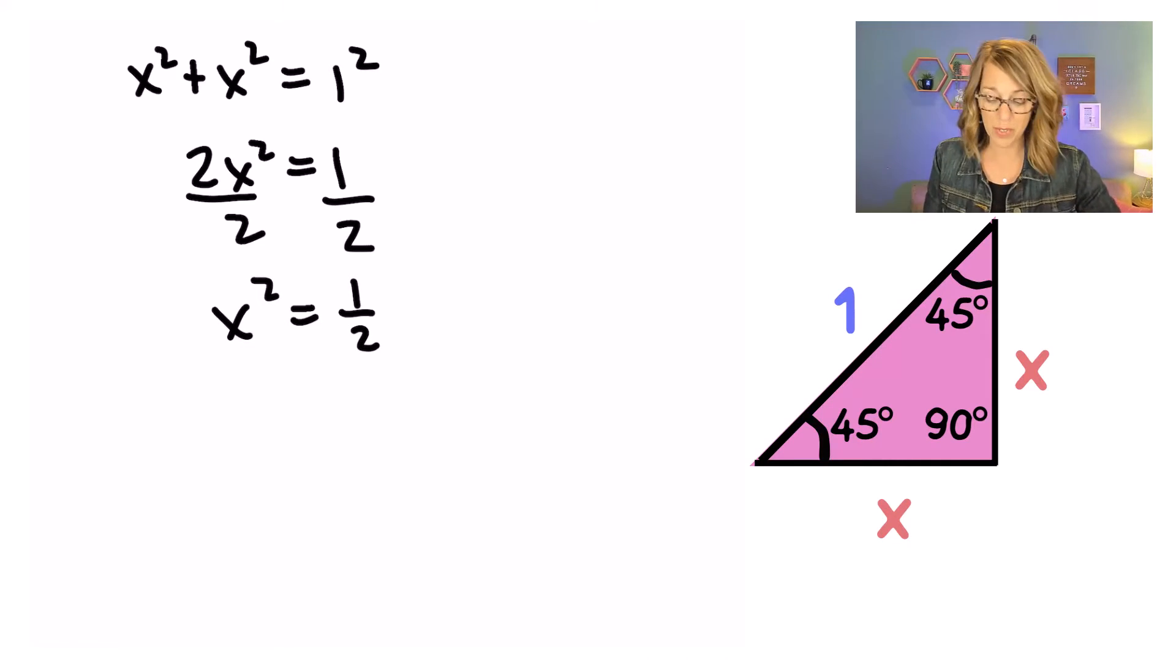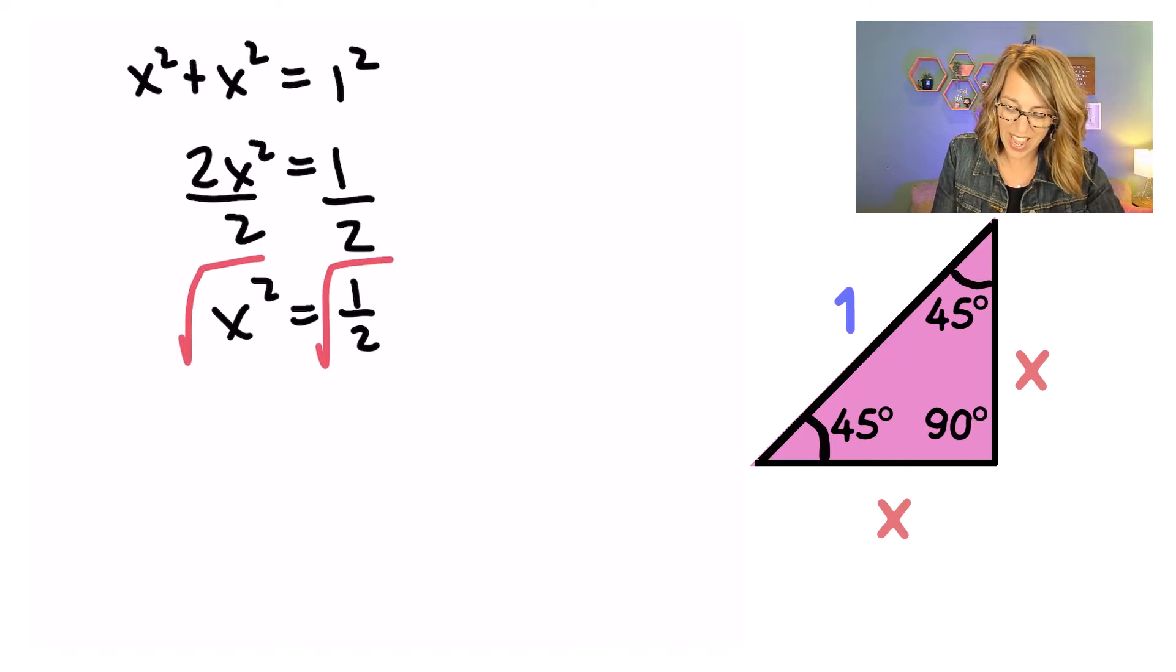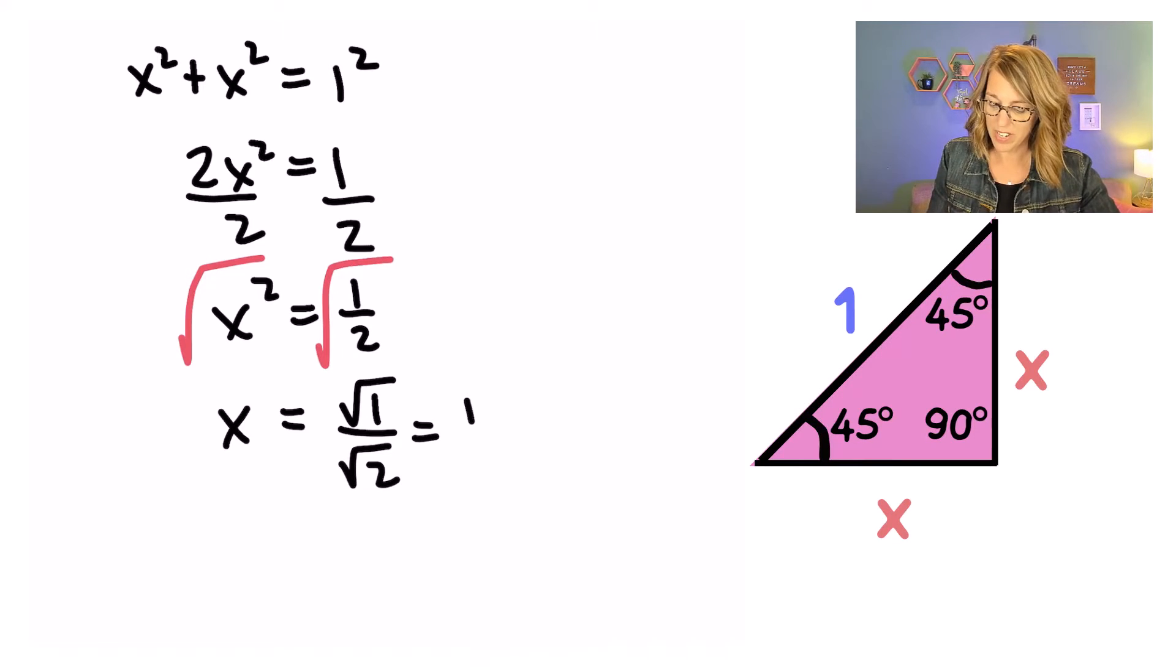I want to take a square root on both sides. As I take that square root on both sides, I end up with an X on the left. I get a square root of 1 over the square root of 2. But the square root of 1 is just 1 and the square root of 2 is just the square root of 2.